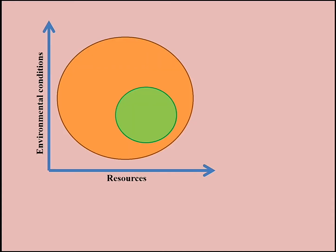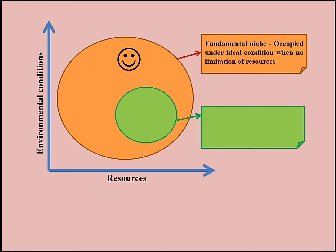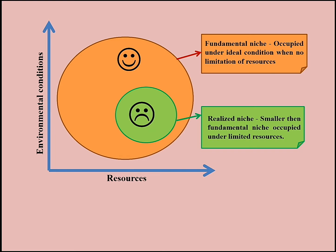Fundamental niche represents an ideal niche in which an organism encounters no enemies such as competitors or predators, in which its physical environmental conditions are optimal, and there is no limit on resources.